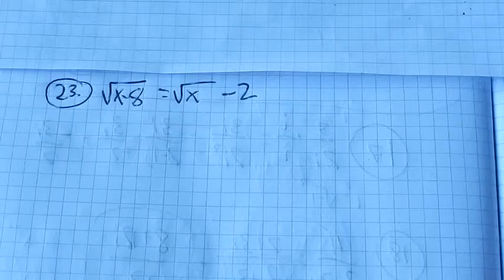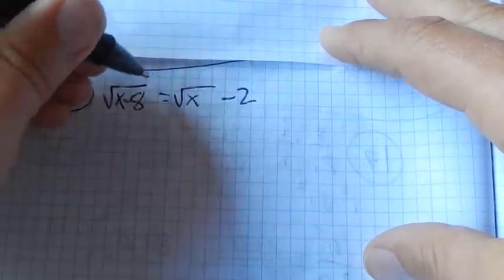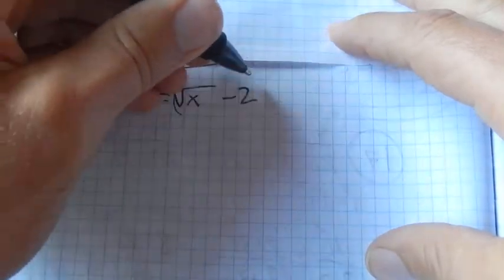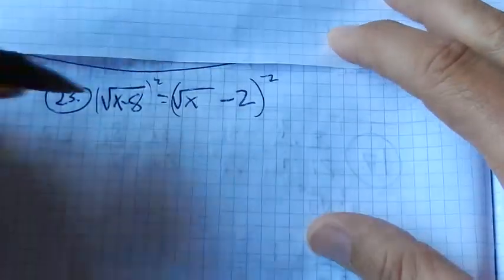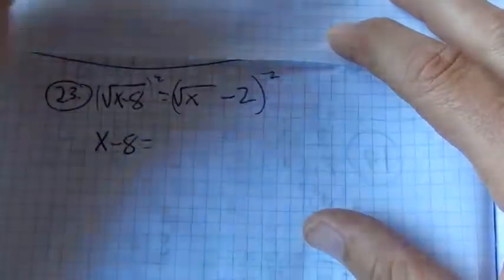What I'm going to do first is get rid of this radical, so I'm going to square both sides. I'm going to square this side and I'm going to square this side. So over here, square root of a square, it's gone.